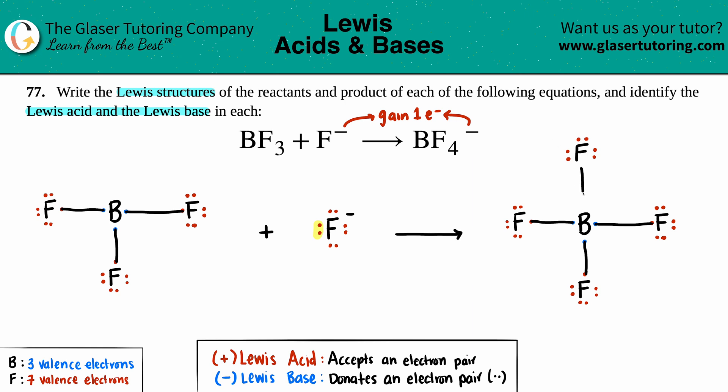So what exactly happened is these electrons went right into the boron. Now if we actually just did the formal charges to find out who has that negative, it's actually the boron now that has the negative charge. So I'm just going to put that there.